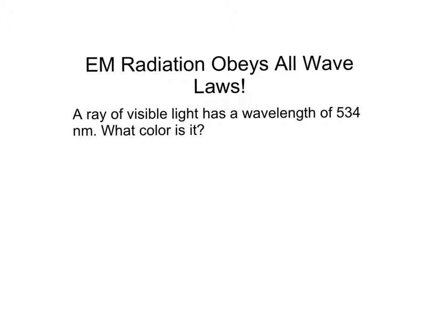So, even though these are unusual waves in the sense that they don't need a medium to travel, as I said, they still obey all the rules about waves that we learned in the past, all the different wave equations that we learned to use in the past. But, here's an example. So, I give you a ray of visible light with a given wavelength of 534 nanometers. What color is it? Pause this video, answer that question, and then unpause, please.